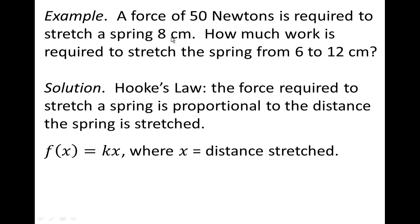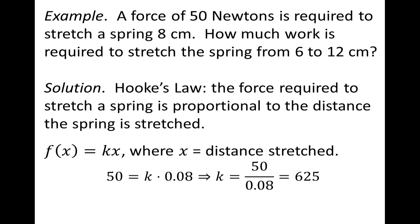We have to be careful — not 8 centimeters. We need this in terms of meters because that's how newtons are defined. So we convert 8 centimeters to 0.08 meters. So 50 newtons equals k times 0.08. Solving for k, we get 625, and our equation becomes f(x) = 625x.